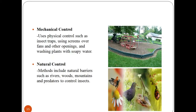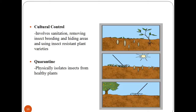There are also additional aspects involving monitoring, fertilizers, and plants, including wildlife rehabilitation. Organizations encourage natural forms of rodent control through exclusion and predator support, preventing secondary poisoning altogether. Another method of pest control involves cultural control and quarantine. Cultural control involves sanitation, removing insect breeding and hiding areas, and using insect-resistant plant varieties. In quarantine methods of pest control, there is a barrier which physically isolates insects from healthy plants.